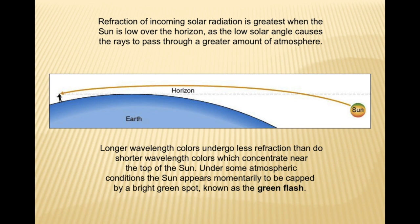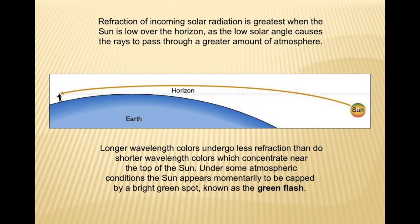Why does the Sun appear to be in the sky even when it is still below the horizon? Refraction of incoming solar radiation is greatest when the Sun is low over the horizon, because the low solar angle causes rays to pass through a greater amount of atmosphere, meaning light travels a longer distance to reach the observer's eyes. Longer wavelengths undergo less refraction than shorter wavelengths, which concentrate near the top of the Sun. Under certain atmospheric conditions, the Sun appears momentarily capped by a bright green spot called the green flash. For the same reason, the Sun appears red at sunrise and sunset.